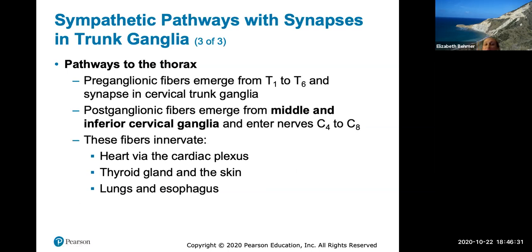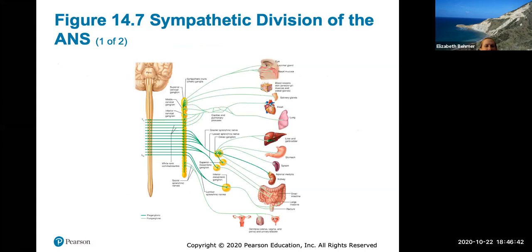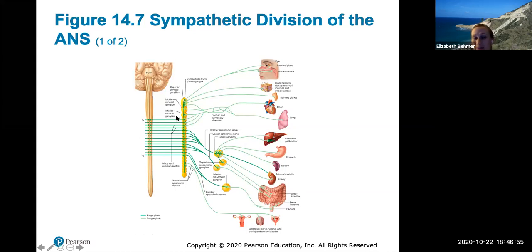To the thorax, fibers innervate the heart, the thyroid gland, the skin, and the lungs — where they dilate the bronchioles — as well as the esophagus. The sympathetic division is the thoracolumbar division with short preganglionic fibers synapsing on the sympathetic trunk ganglia, and then long postganglionic fibers going to the effectors or target organs.